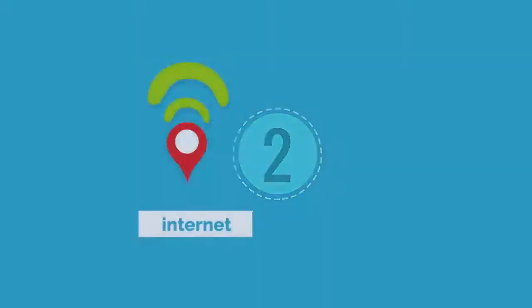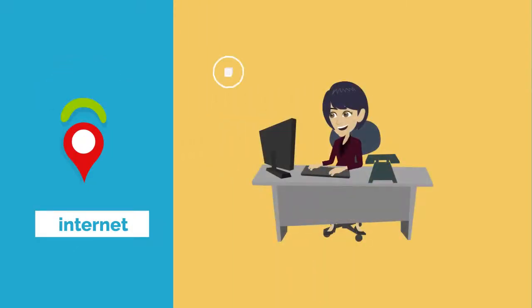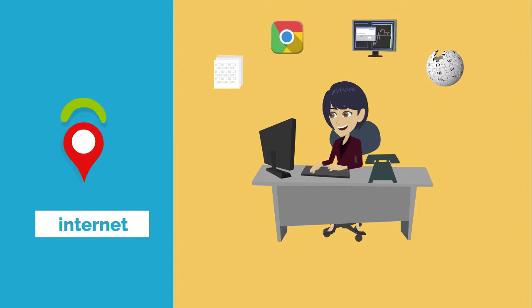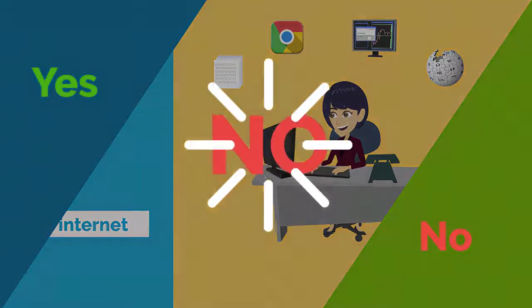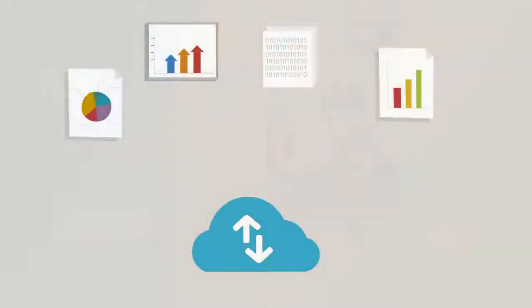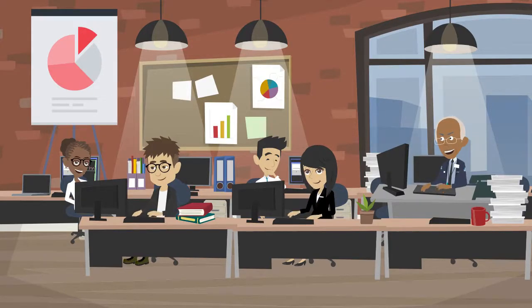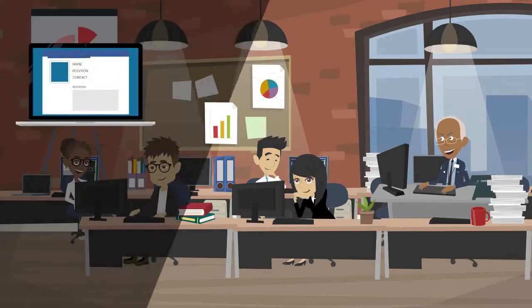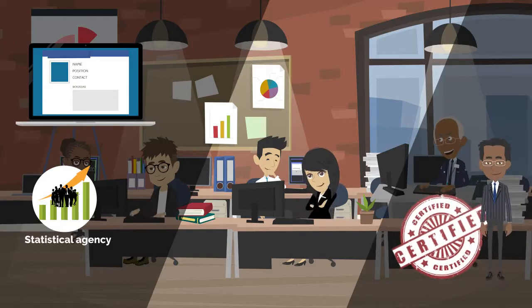Question two. How about data on the internet? Could she simply retrieve information from any internet source on this topic? The answer is no. Statistics retrieved from internet sources are not official statistics unless they originated from a qualified producer of official statistics in the country. A good way to access official statistics is to visit the website of the statistical agency or any other certified producer of official statistics.